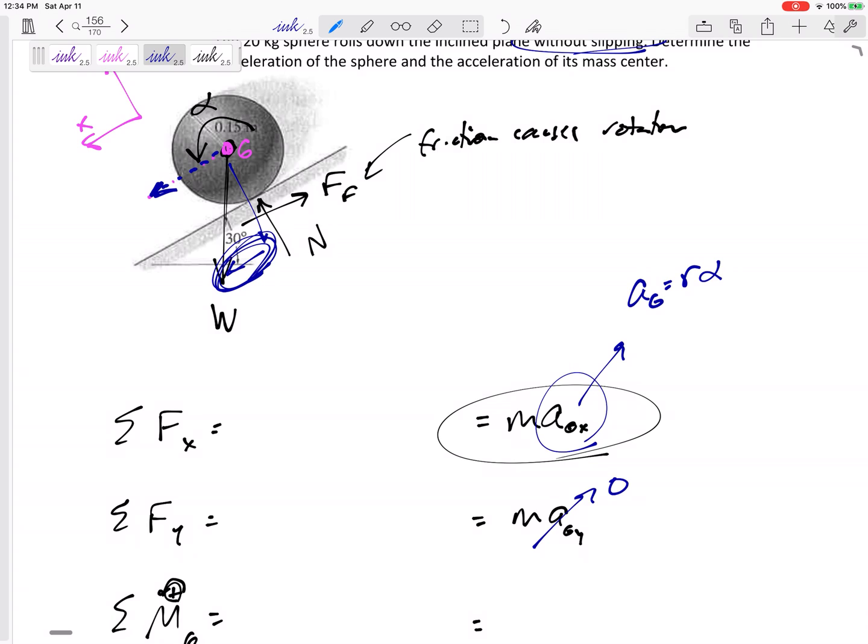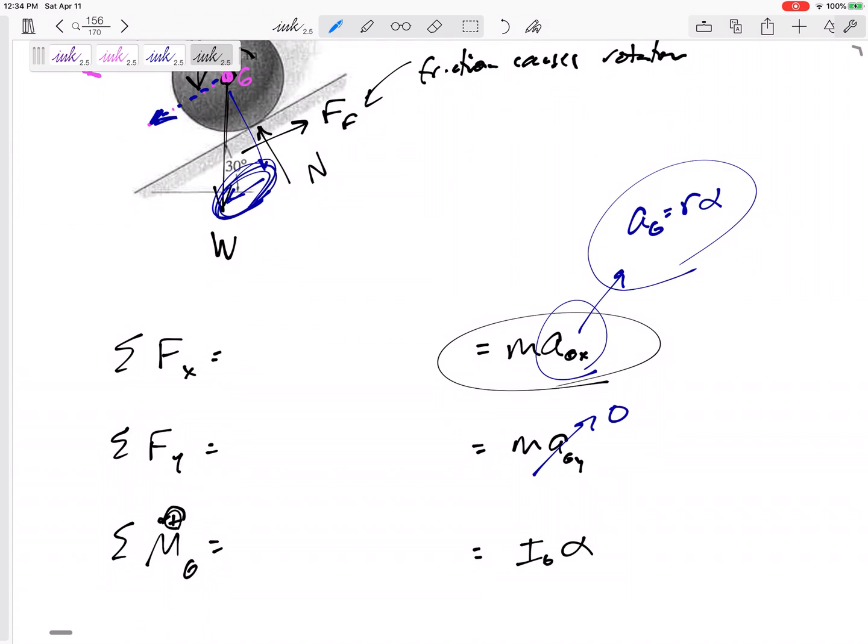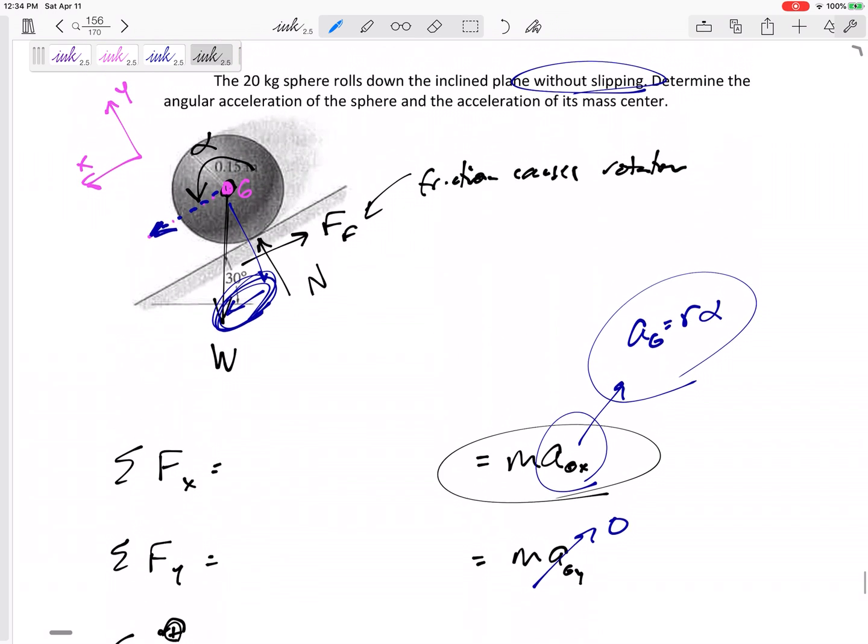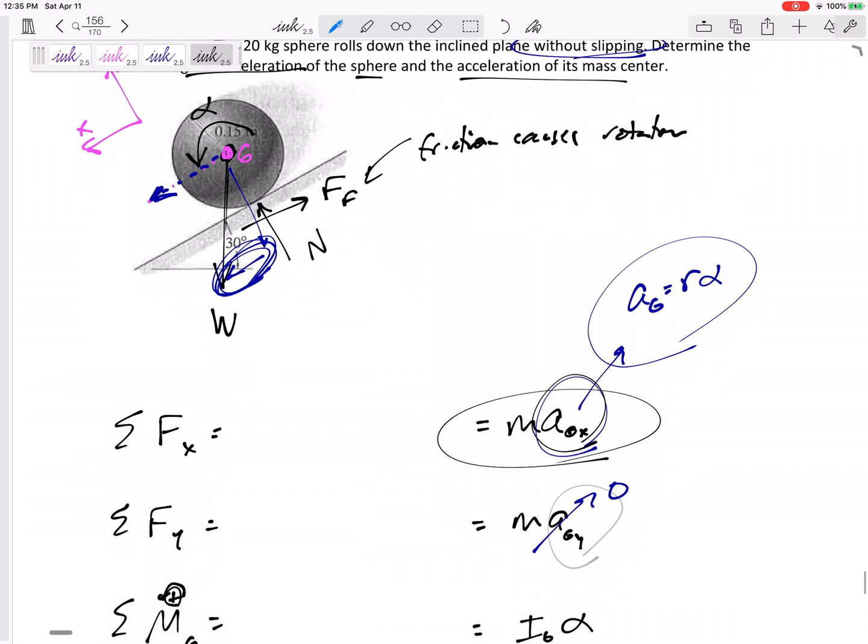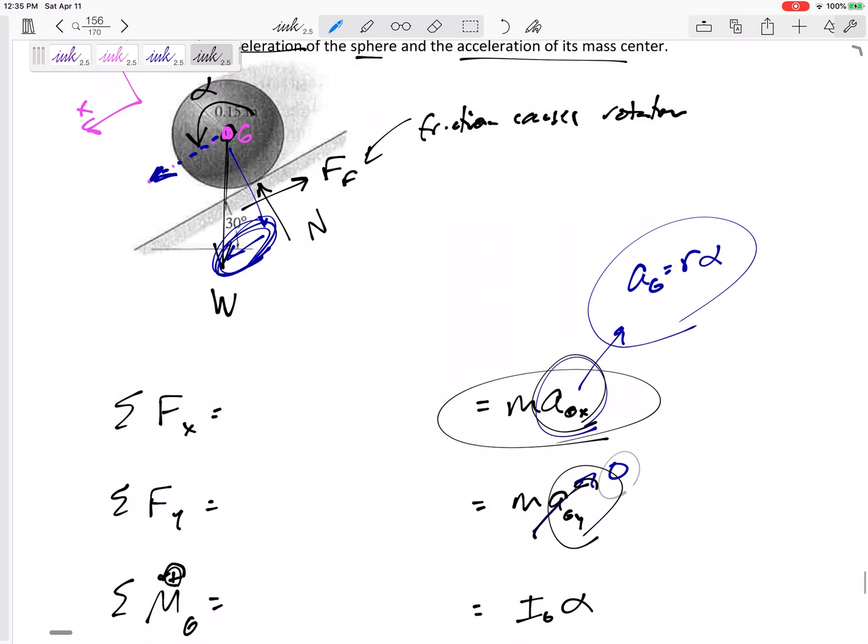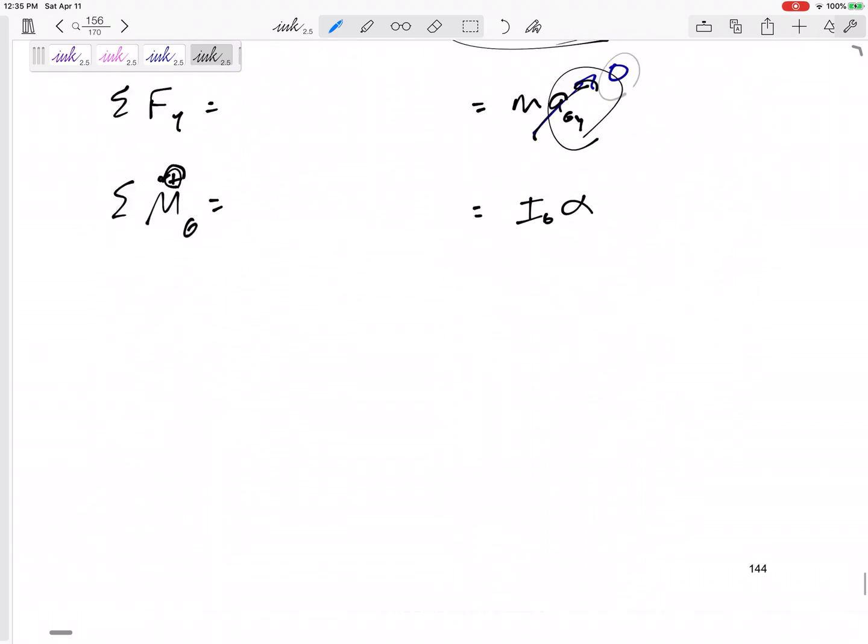So anyway, this is an interesting problem where you've got to get that force of friction in the right direction. You've got to know that the acceleration of the center of the wheel is R alpha. But anyway, summing the force in X equals MAX, summing the force in Y equals MAY, summing the moments about G would be IG alpha. So I could define everything, angle acceleration of the sphere, A-G-X, and A-G-Y, though A-G-Y is 0 at this instant. So, look at that problem.